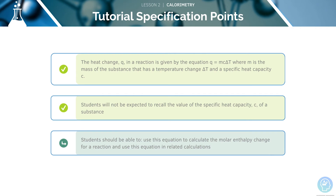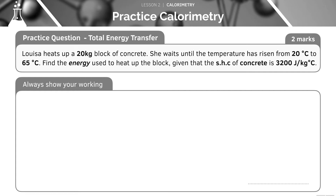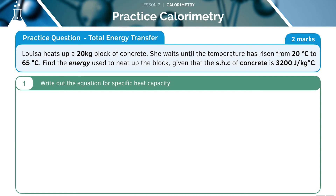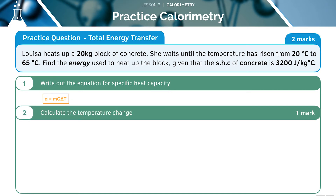Now let's look at our final specification point: calculating molar enthalpy change for a reaction. Let's have a go at this exam question — pause the video here to have a go at it yourself before we explain it step by step. First, we need to write out the equation Q = mcΔT, then calculate the temperature change. We haven't been told this value so we need to work it out. The temperature has risen from 20 degrees to 65 degrees, so the temperature change must be 45 degrees.